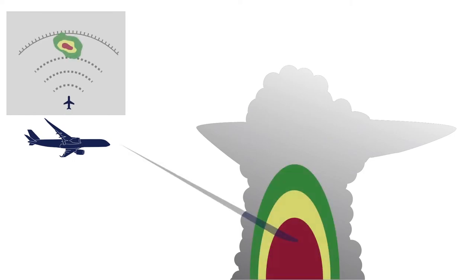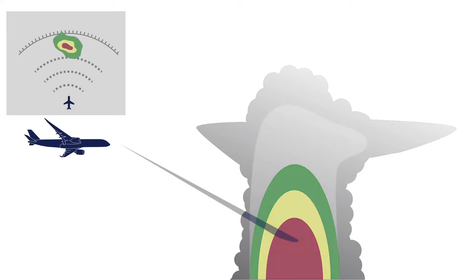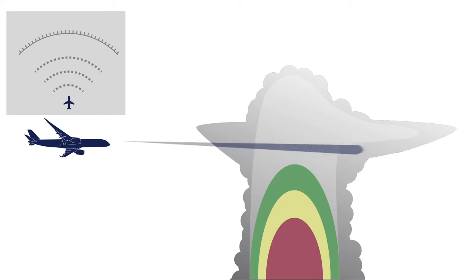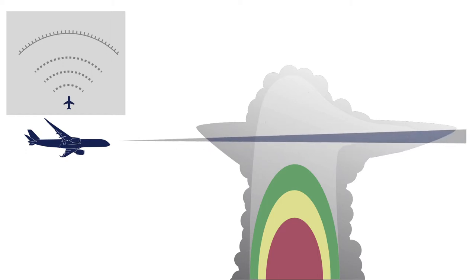How can a weather radar help? At the sides of such a convective cell, the pilot will see on the radar display different shades of colors ranging from magenta for turbulence, red for high reflectivity, to yellow and green for low reflectivity zones. The size and low reflectivity of ice crystals make them almost invisible to the weather radar. The green area will be an indication of low reflectivity but will not exclude the presence of ice crystals, so it will be necessary to adapt the flight path accordingly.